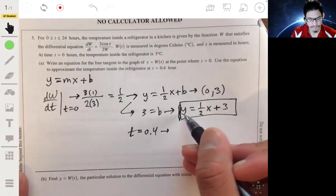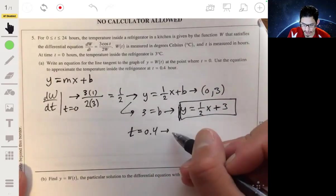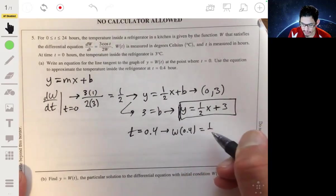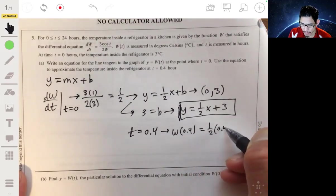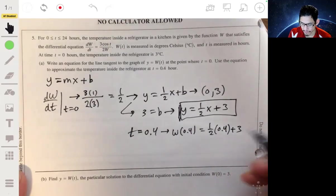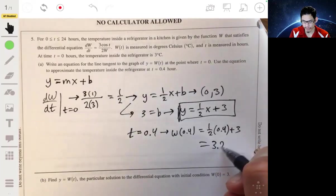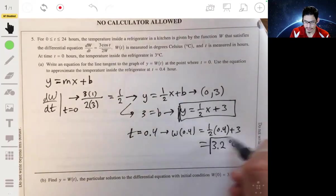So, when T equals 0.4, the temperature, or W of 0.4, is equal to 1 half times 0.4, plus 3, which will be 3.2. So, 3.2 degrees Celsius is our answer.